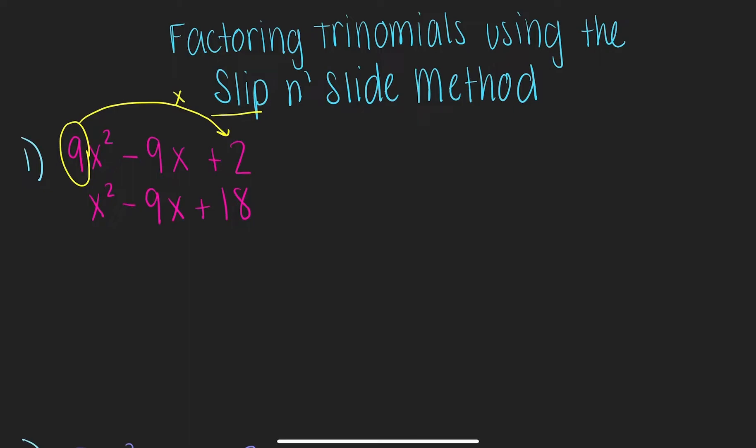all you need to find are the two numbers, I'm going to write my work over here, that multiply to be the last number, positive 18, and add to be the middle number, negative 9.